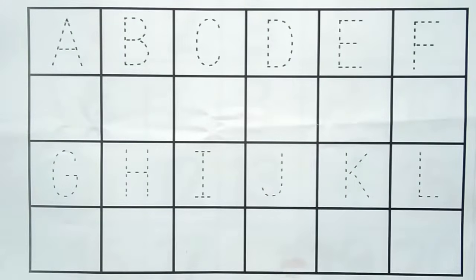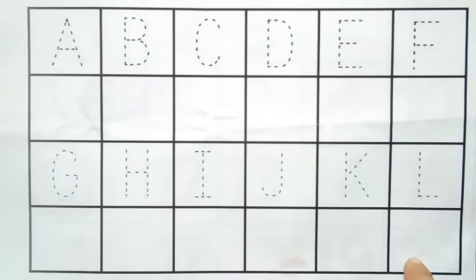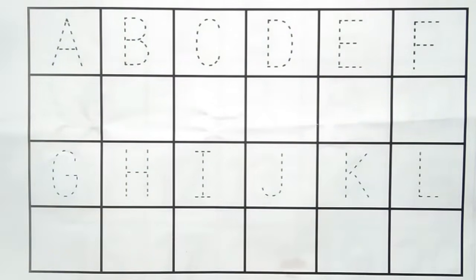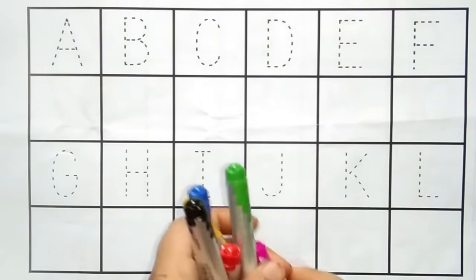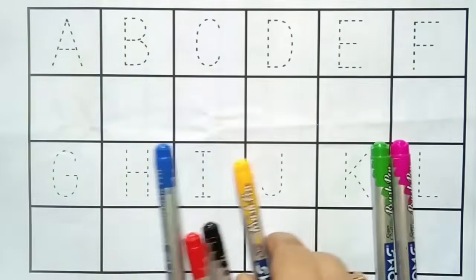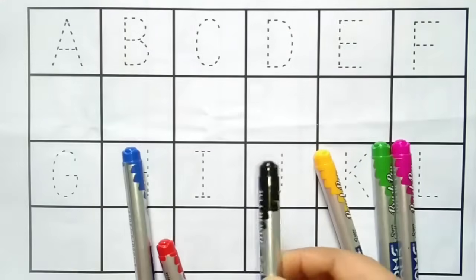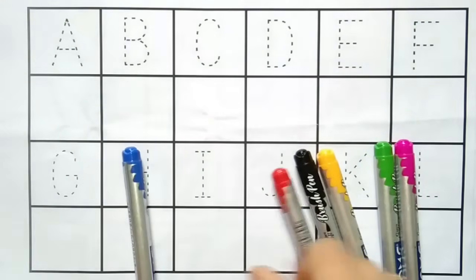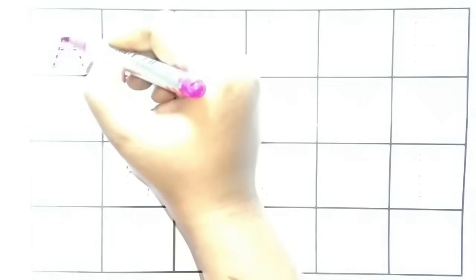Hello kids, welcome to my channel. Let's learn ABCD alphabets and one to twelve numbers counting. Let's learn some color names: pink color, light green color, yellow color, black color, red color, and blue color.